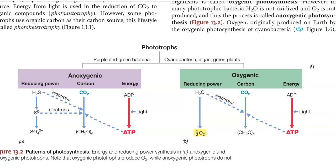Phototrophs can be divided into two groups. One is the Oxygenic Group of Phototrophic Organisms and another one is the Anoxygenic Group of Photosynthetic Organisms. Under the Oxygenic Group, cyanobacteria, algae, and green plants can be grouped. Based on the reducing power, carbon and energy, they can be of an oxygenic nature.